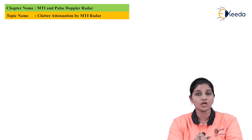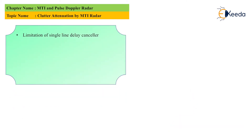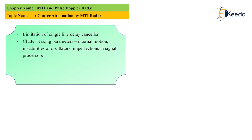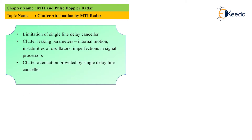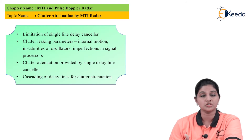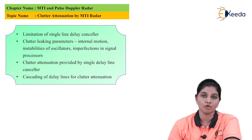In this topic we are going to discuss the limitation of the single delay line canceller. We will also discuss clutter leaking parameters: internal motion, instability of the oscillator, and imperfection in the signal processor. Then we will discuss clutter attenuation provided by the single delay line canceller, and finally cascading of delay lines for clutter attenuation. At the end we have solved some MCQs to understand the topic properly.